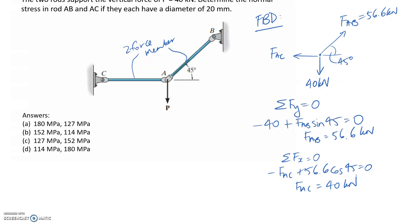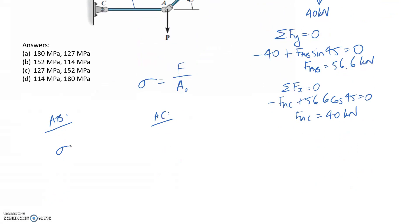Now that we have the internal force in both of our members, we can move on to the stress calculations. We know that the normal stress is equal to the force divided by the cross-sectional area of our member. We're going to need to do it separately for each of our members. So for AB, and then we'll do it for AC. So stress for AB. We need the force in member AB.